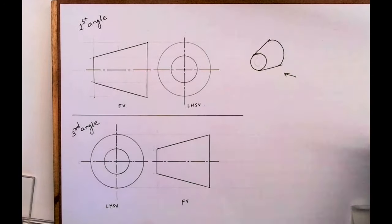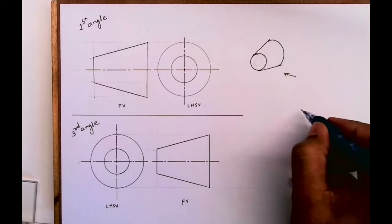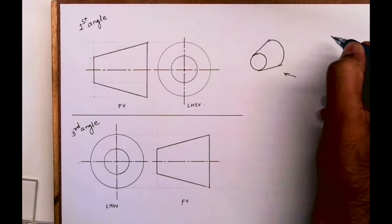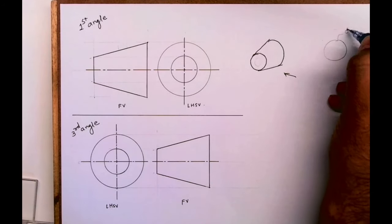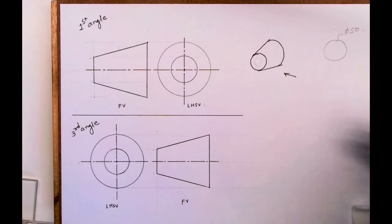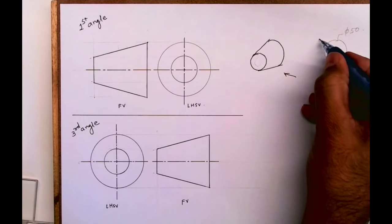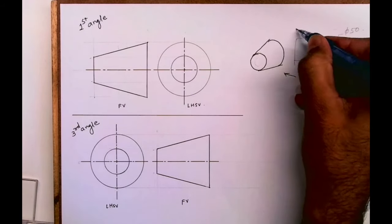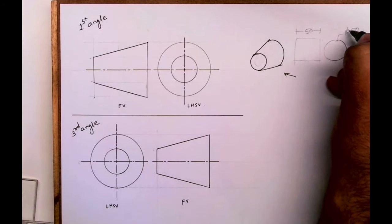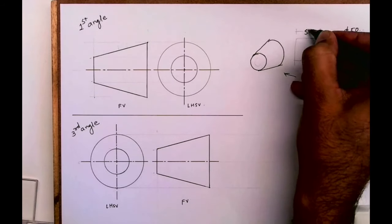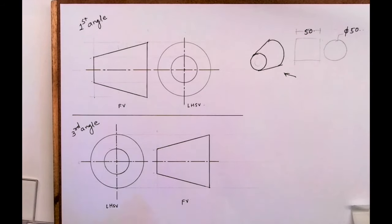So to draw this, let's take one circle here. I'm taking diameter 50. If I'm taking diameter 50, then I have to draw a square of 50 in front view. If I'm taking 40, then I'll take 40. In this case I'm taking 50, so take diameter 50 in side view and in front view draw a square of side 50.